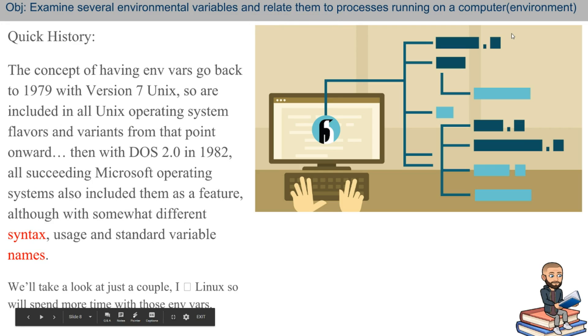Okay, so the concept of having environmental variables go back to 1979 with version 7 of Unix. And that's pretty interesting because I've just recently done some videos on early CPUs. So the x86 architecture also starts in 1979, then tells Chip the 8086. But anyways, these environmental variables were included in all the Unix operating system flavors and variants from that point forward. Same with Apple's DOS. And, of course, Linux was based on Unix. So environmental variables are on all the operating systems. They just have different syntax, usage, and standard variable names.